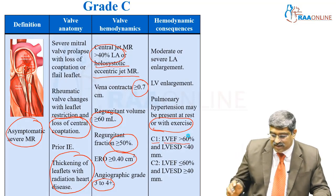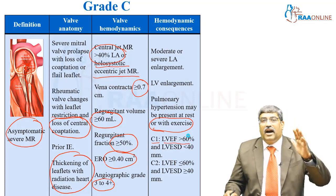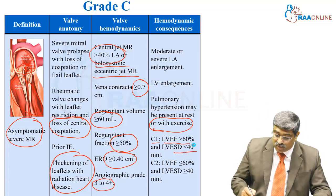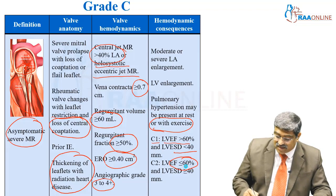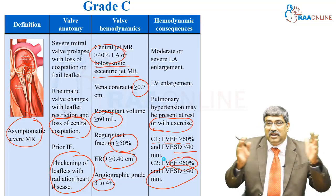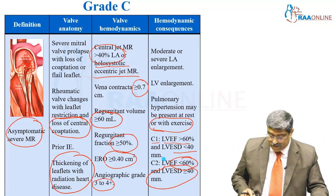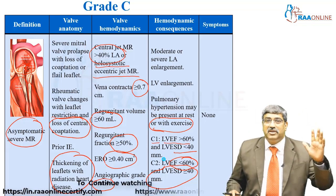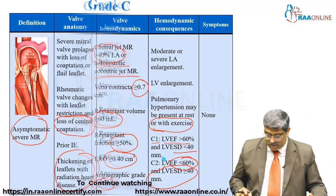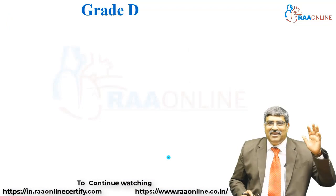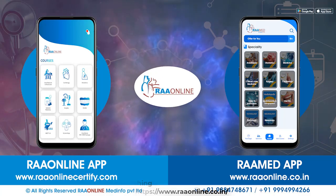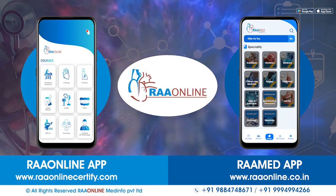In C1, the ejection fraction is greater than 60% and LV systolic diameter is less than 40 mm. In C2, the ejection fraction is less than 60% and systolic diameter is greater than or equal to 40 mm, meaning the LV is hugely dilated, though the patient remains asymptomatic due to sufficient compensation. Grade D shares all findings similar to Grade C.